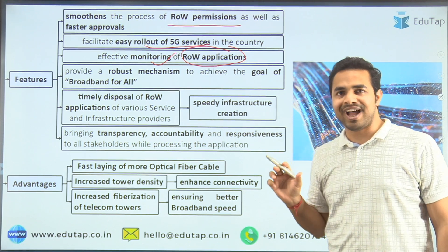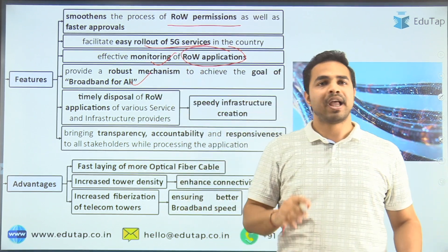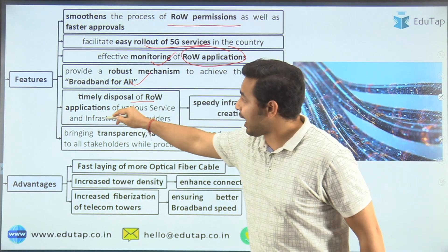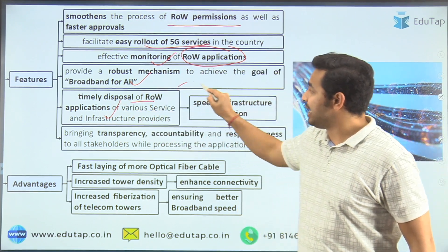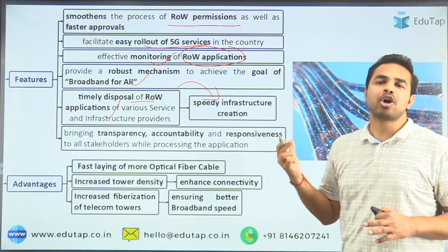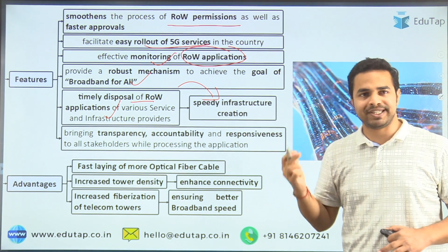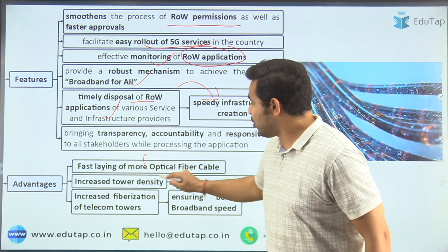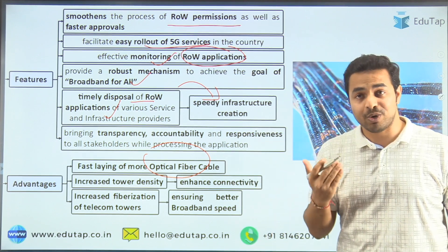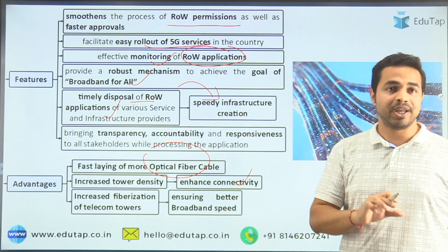It is going to help the Government of India in achieving the goal of broadband for all. Apart from that, it is also going to lead to timely disposal of these applications, which will lead to speedy infrastructure creation across the country. When we talk about the different advantages of launching this portal, these are: fast laying of more optical fiber cables across the country and increased tower density, which will lead to enhanced connectivity.